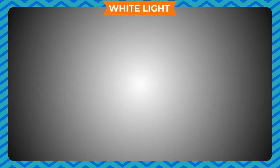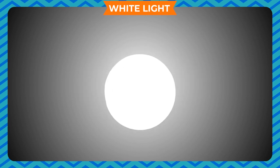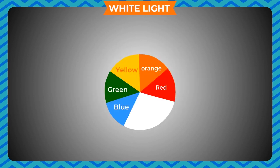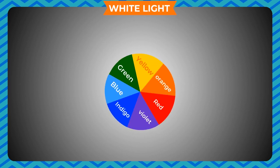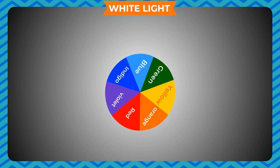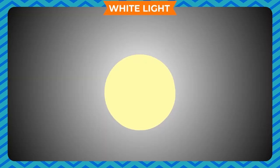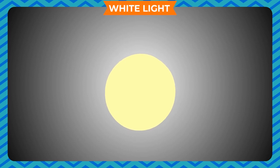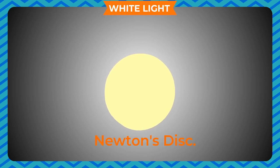Take a circular piece of white cardboard and paint seven sectors on it with the seven rainbow colours. Insert a pencil through the centre of the disc so it looks like a top. Spin the top very fast and observe — surprisingly, the disc appears white. Hence, it is clear that the seven colours combine together to form white. Conversely, white colour is made up of the seven colours of the rainbow. This disc is called Newton's disc.